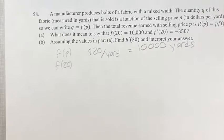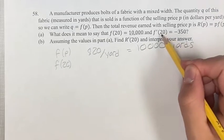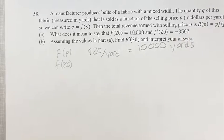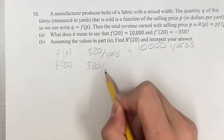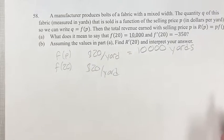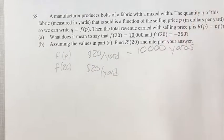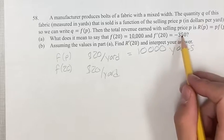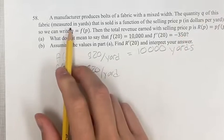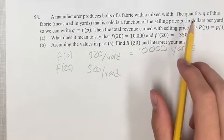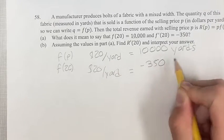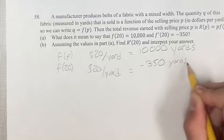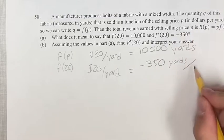And what does it mean for the derivative of F when P is equal to 20 is equal to negative 350? In a similar situation, when we're selling for $20 per yard, the rate of change of the quantity is changing by negative 350 yards per change in dollar per yard of the selling price. So negative 350 yards per dollar per yard.